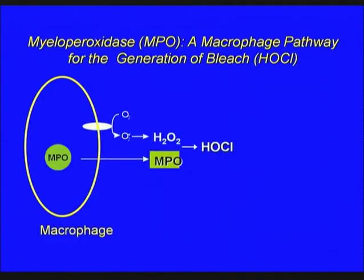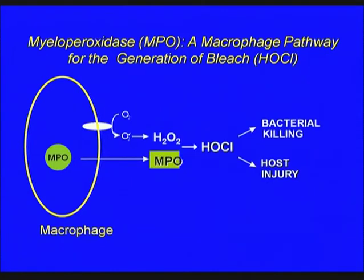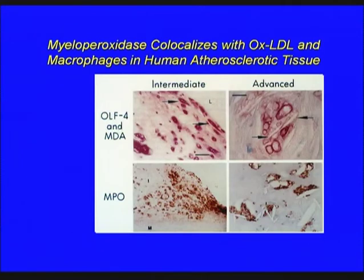Your white blood cells make bleach. The normal role of this pathway is to kill bacteria and fungus, and we've been able to use mice that lack myeloperoxidase to demonstrate this. But what we proposed when I originally moved to Washington University was that bleach could also be a way to damage host tissue at sites of chronic or acute inflammation, and that bleach generation by myeloperoxidase might be a mechanism for macrophages to damage LDL and promote foam cell formation.